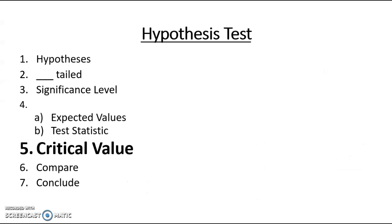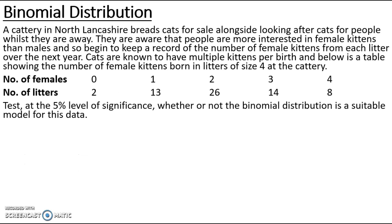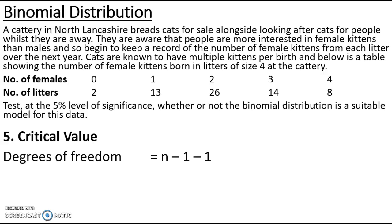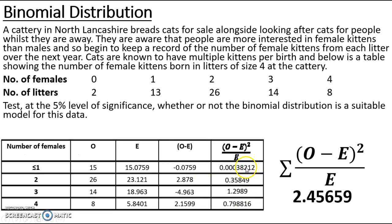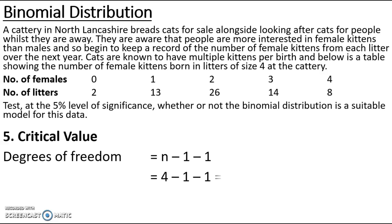To find the critical value I need the degrees of freedom. Normally degrees of freedom is the number of categories minus 1, but because I have had to estimate p, there is extra uncertainty and I need to subtract an additional 1. We have 4 categories after combining, so degrees of freedom = 4 − 1 − 1 = 2.